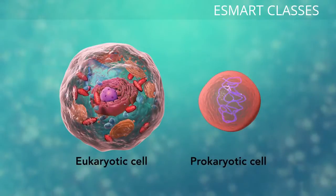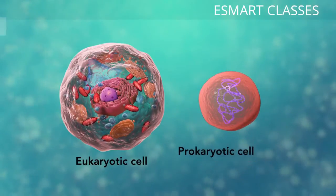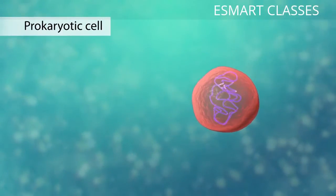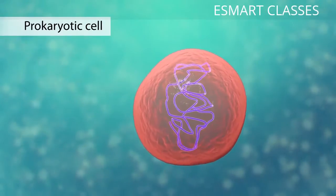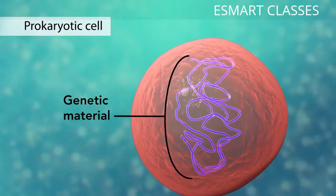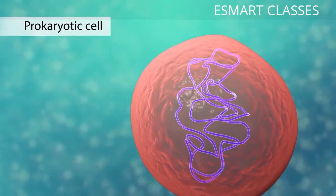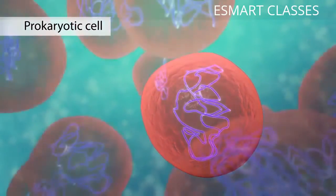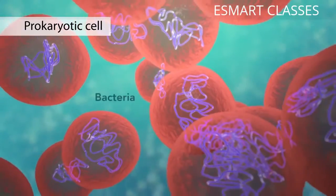The second category is prokaryotic cells. They don't have a nucleus or membrane enclosed organelles. They do have genetic material but it's not contained within a nucleus. Prokaryotic cells are always one-celled or unicellular organisms such as bacteria.